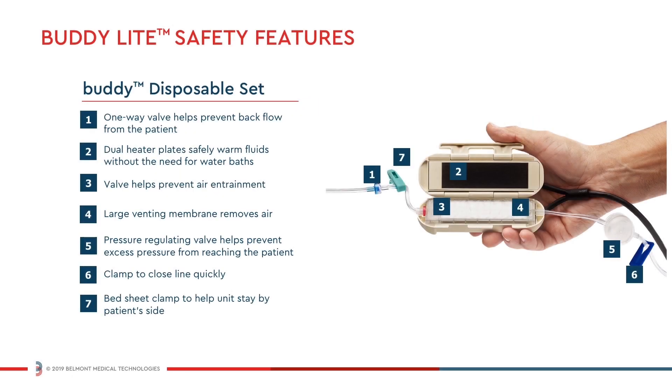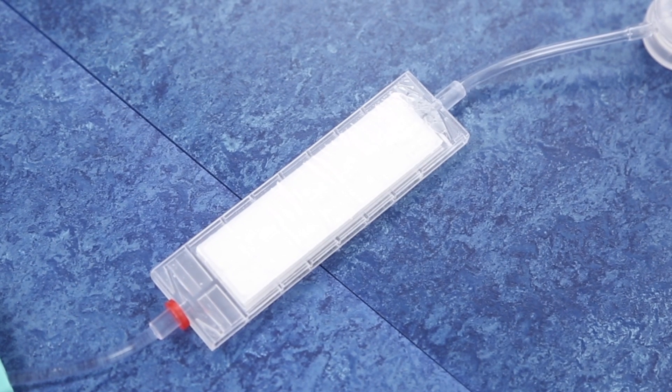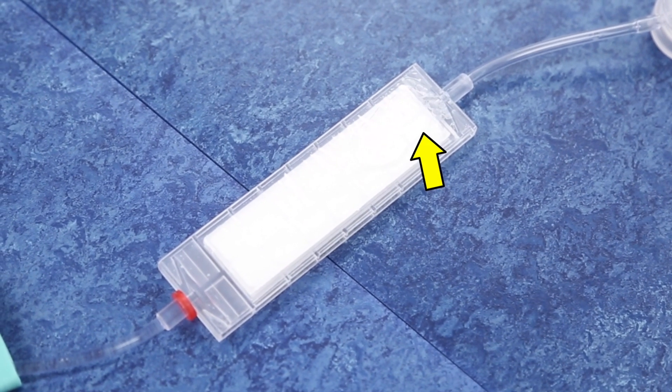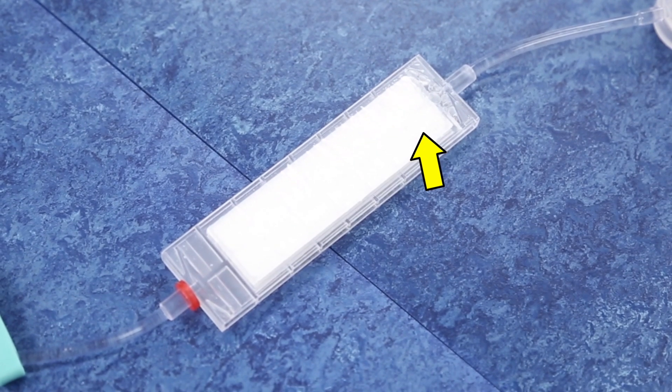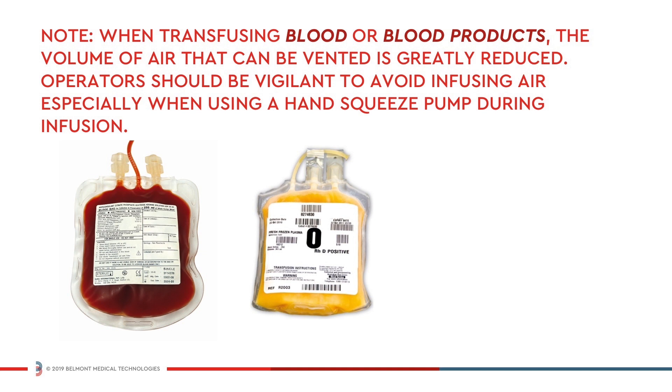The buddy disposable set is equipped with multiple safety features that can help protect the patient from unsafe operating conditions. As crystalloid solution travels through the disposable set, the microporous membrane located within the disposable automatically vents air. When transfusing blood or blood products, the volume of air that can be vented is greatly reduced. Operators should be vigilant to avoid infusing air, especially when using a hand squeeze pump during infusion.